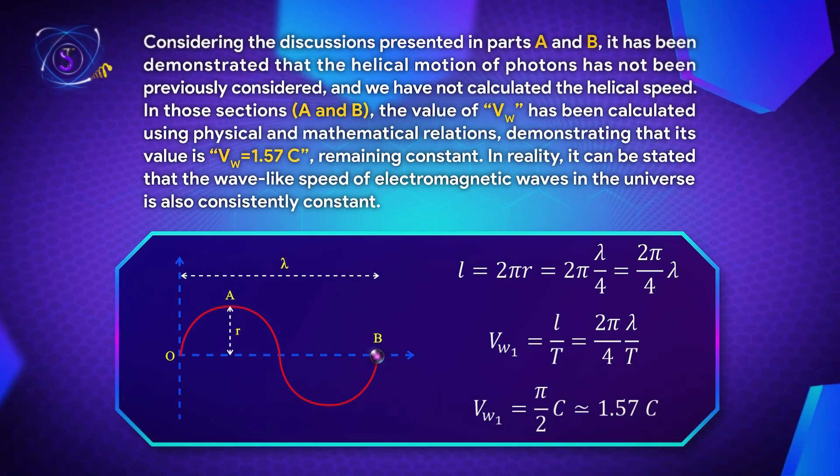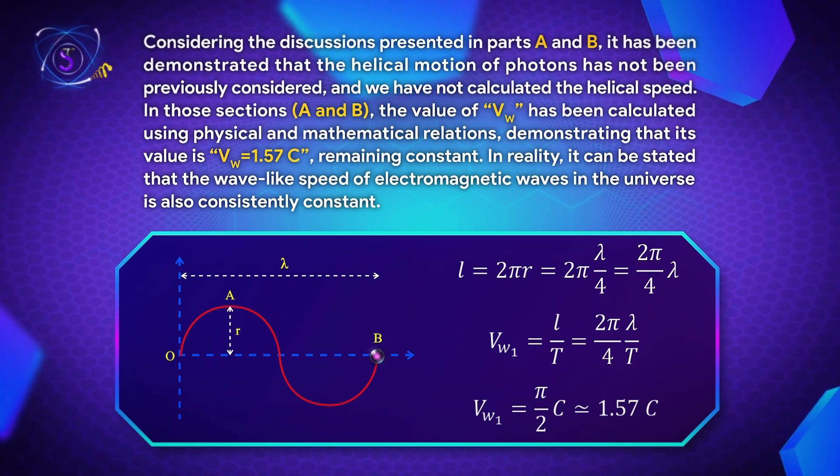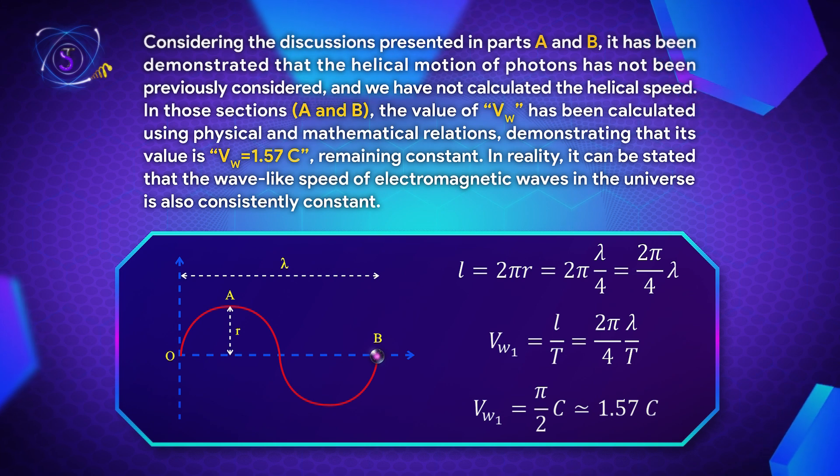Considering the discussions presented in Parts A and B, it has been demonstrated that the helical motion of photons has not been previously considered, and we have not calculated the helical speed. In those sections, the value of V_w has been calculated using physical and mathematical relations, demonstrating that its value is V_w = 1.57C, remaining constant. In reality, it can be stated that the wave-like speed of electromagnetic waves in the universe is also consistently constant.